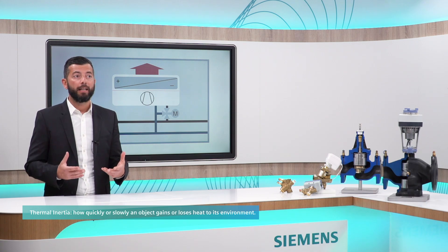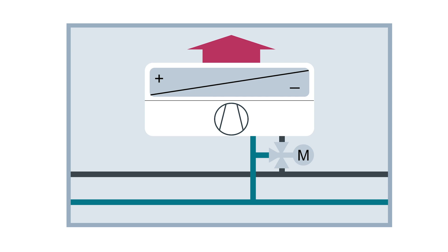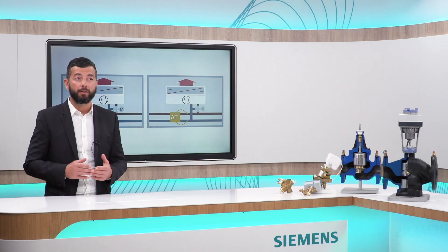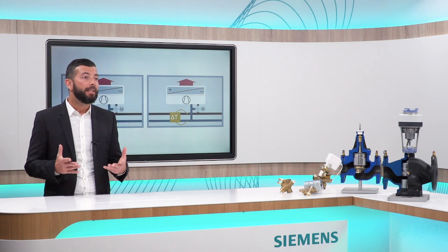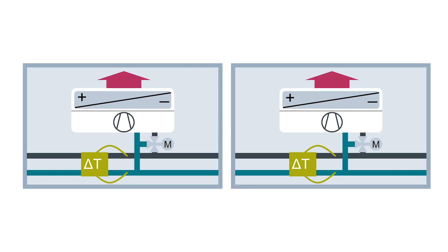A low inertia is the capability to quickly transfer the energy from the water into the air, so that the system can be operated with a fairly high temperature difference between flow and return pipes at the heat exchanger. This means that you switch from a constant volume system design with three-port valves to a dynamically variable flow system with speed-controlled pumps and two-port valves.